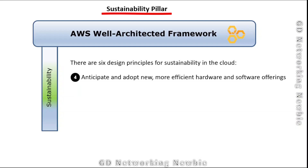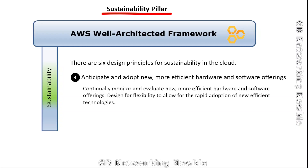The fourth principle is to anticipate and adopt new, more efficient hardware and software offerings. Continuously monitor and evaluate new, more efficient hardware and software offerings that can help minimize energy consumption and go green. Also design for flexibility to allow for the rapid adoption of new efficient technologies, so that your architecture can accept energy-efficient hardware or software in the future.